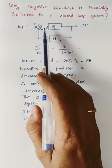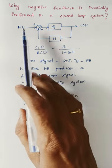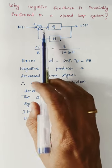When you consider negative feedback, the error signal is the difference between your reference input and the feedback signal. That is the error signal.